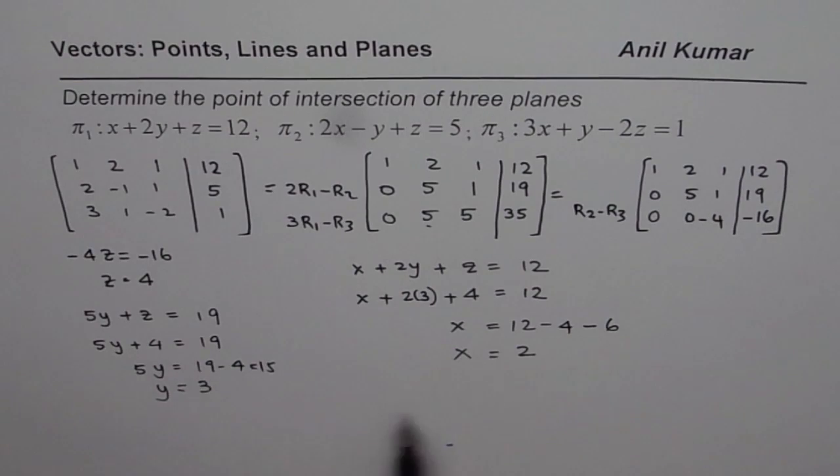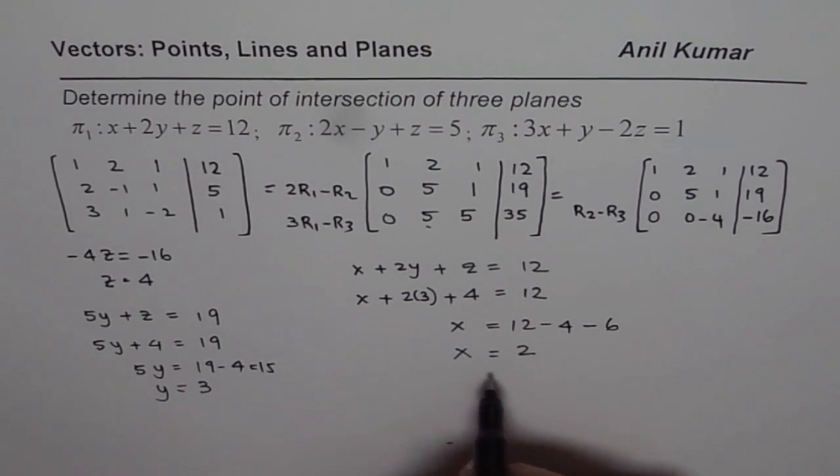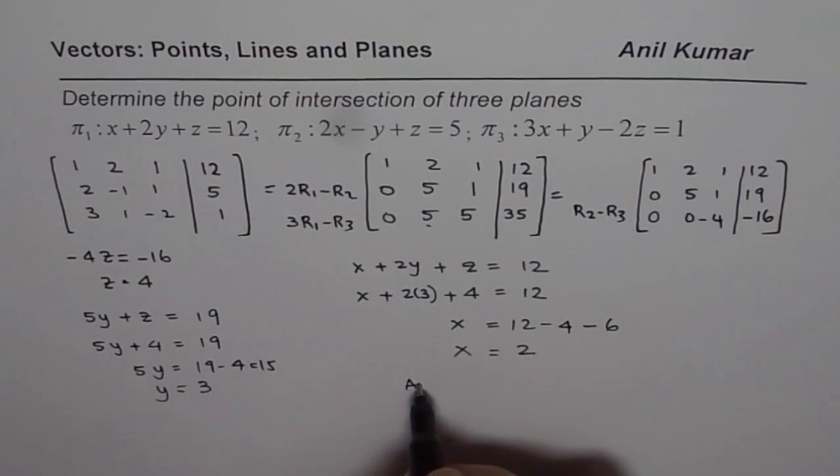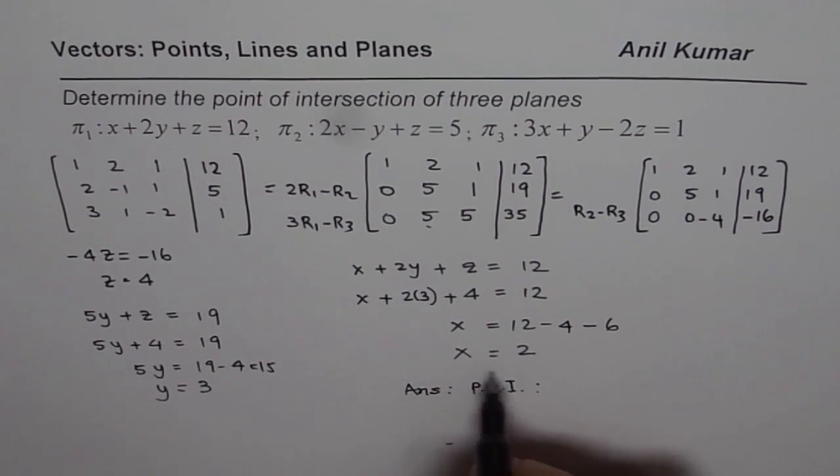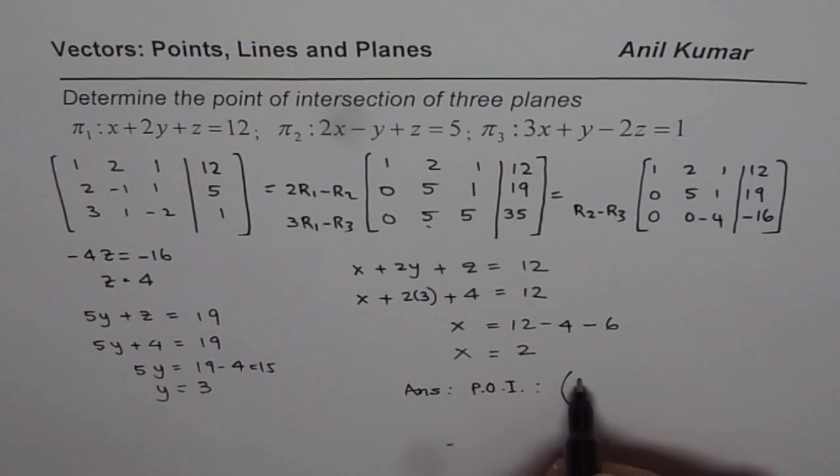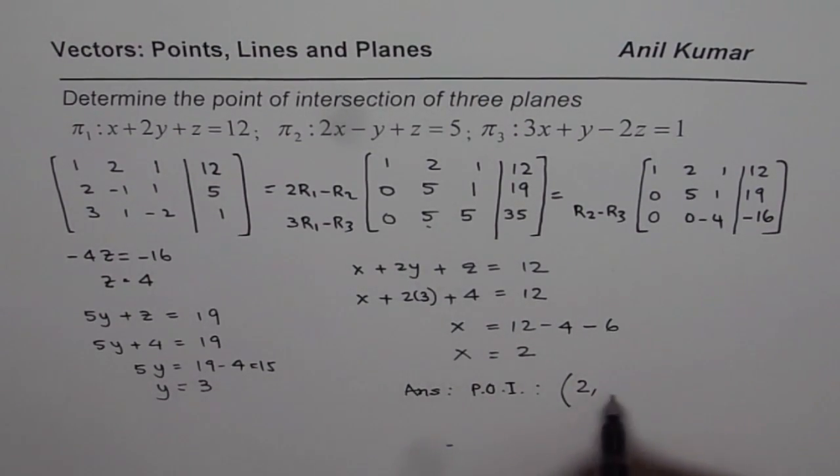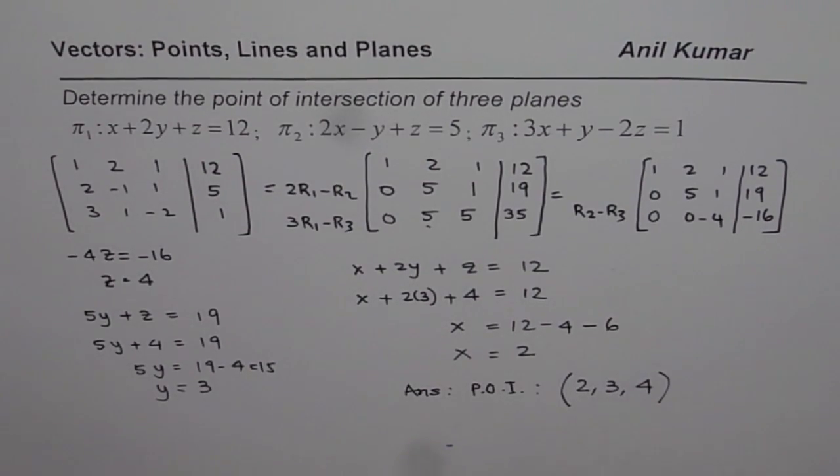So since we got all these three coordinates of the points, we can write down our answer that the point of intersection. So these three planes intersect at a point, and the point coordinates are 2 for x, 3 for y, and 4 for z. That's the point of intersection.